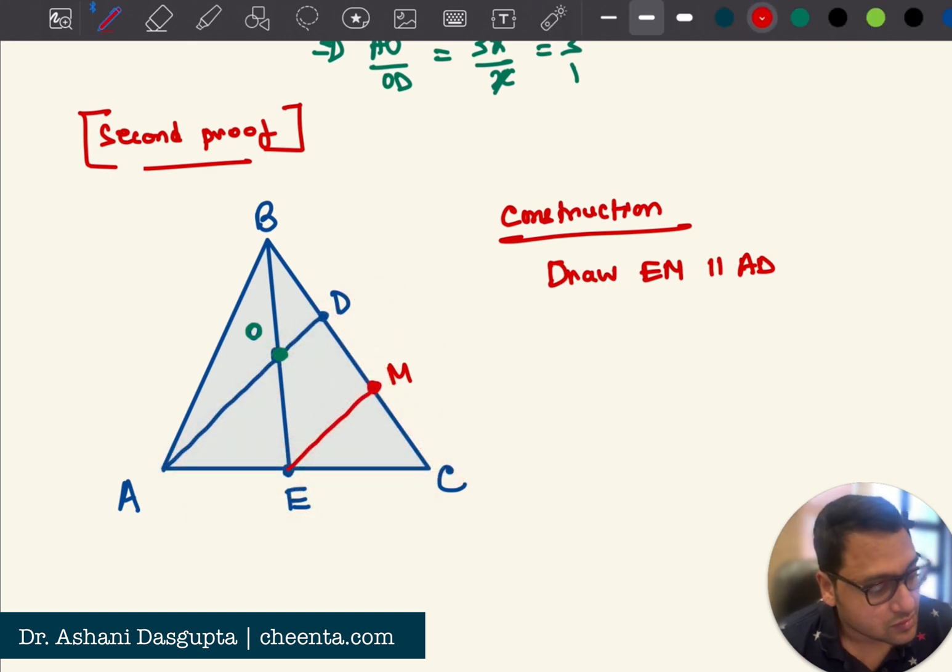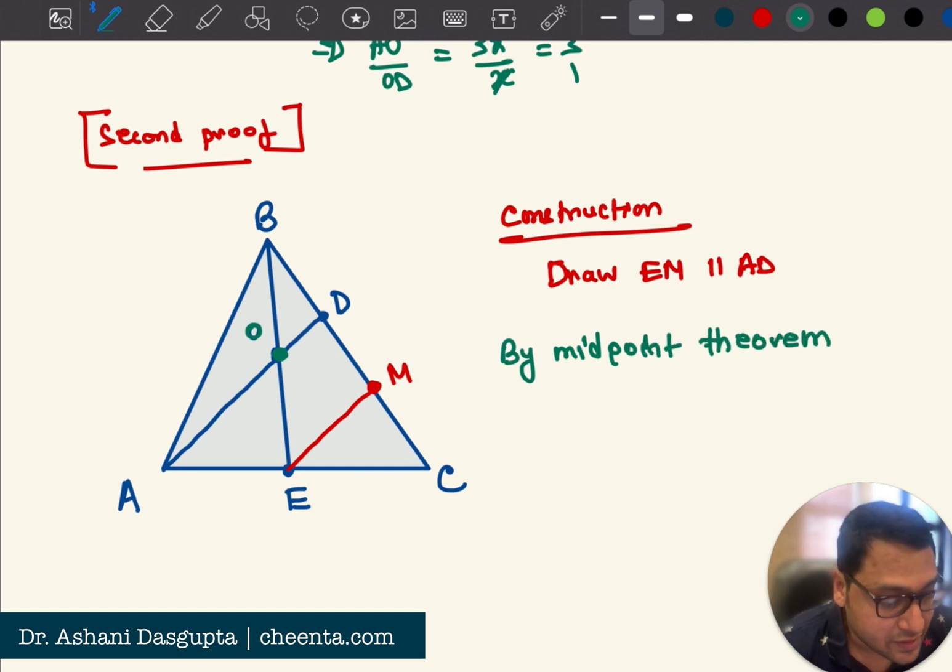M is the midpoint of DC. Right. So by midpoint theorem, midpoint theorem or the converse of it. M is the midpoint of DC. So these two are equal. M is midpoint of DC.